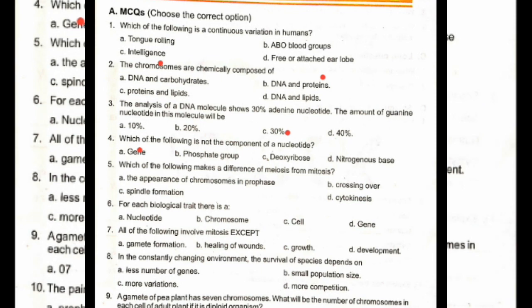Which of the following makes meiosis different from mitosis? Option B: Crossing over. For each biological trait there is a gene. Option D. All of the following involve mitosis except sperm formation. Option A.